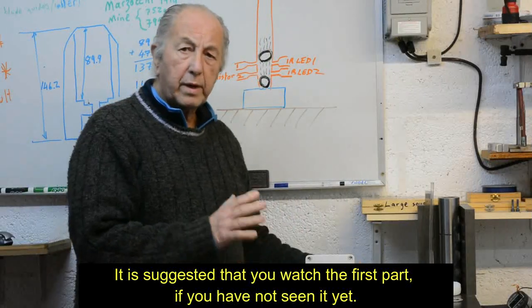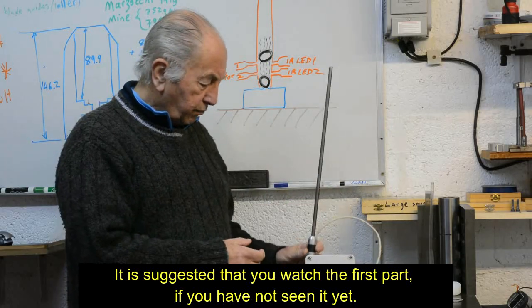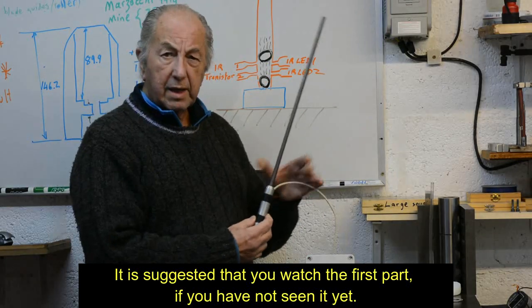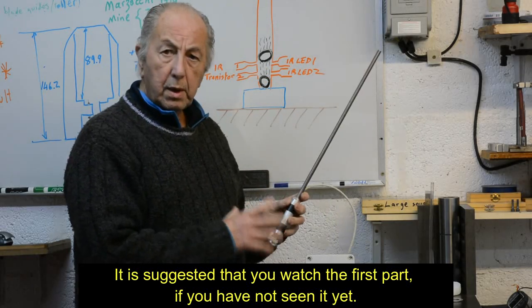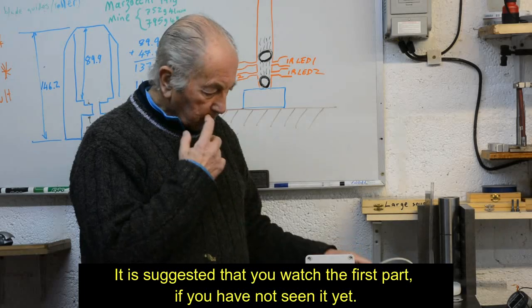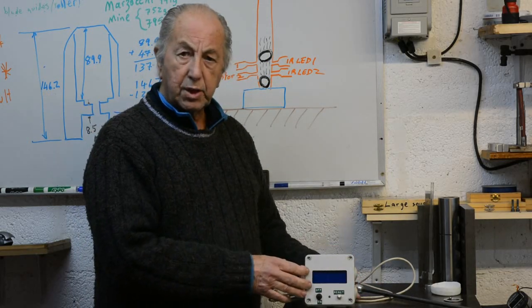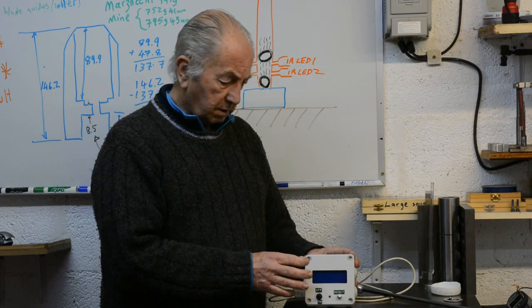In part one of this video, we looked at my rebound hardness tester, in particular the mechanical aspects of building this and the theory of how the hardness testing works. In this video, we're going to look at the magic box, very simple electronics in here using an Arduino.